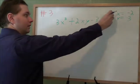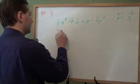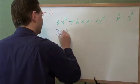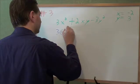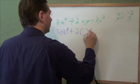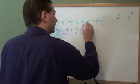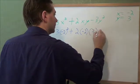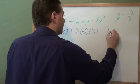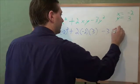For this problem, we just need to plug in the x and the y that they give us. So 3x² becomes 3 times negative 2 squared. 2xy becomes 2 times negative 2 times 3. Minus 3y² becomes minus 3 times 3 squared.